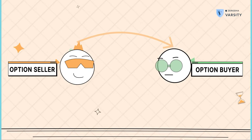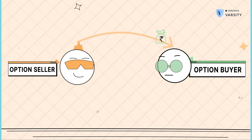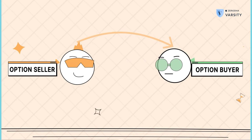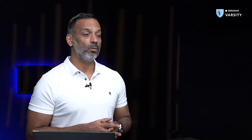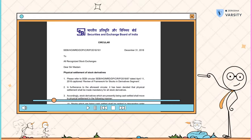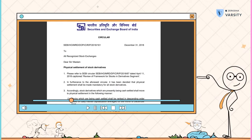In the example that we just spoke about, the 50 rupee difference would be credited to the buyer's account by debiting the seller's account. And with that, the option was deemed settled. But recently, the rules of the game have changed.